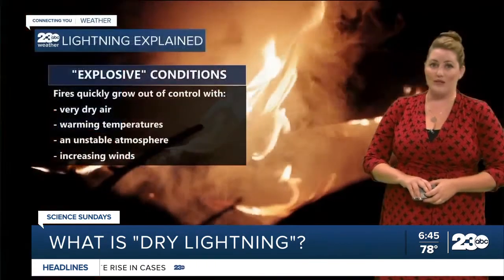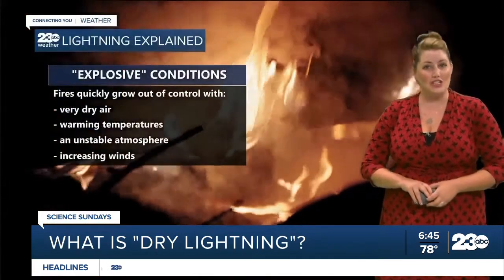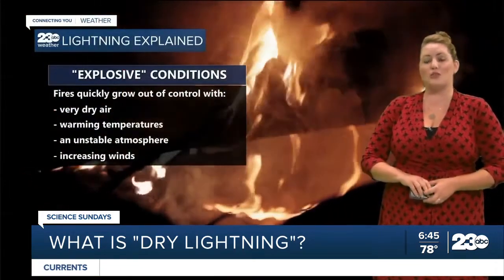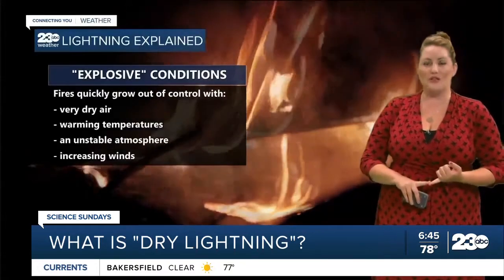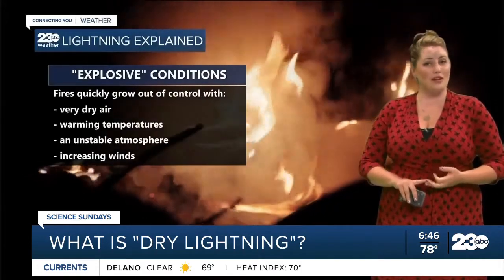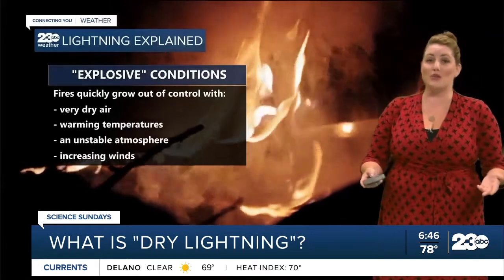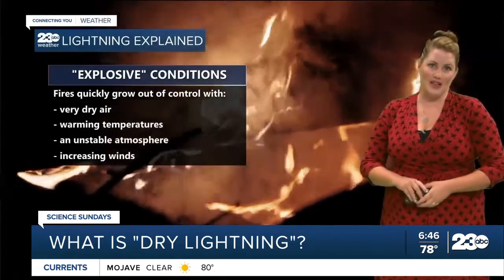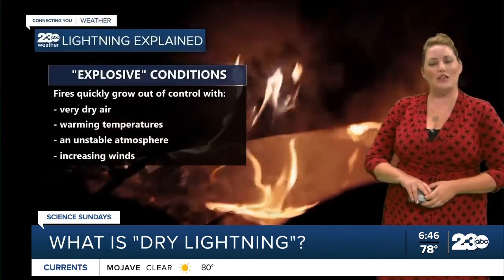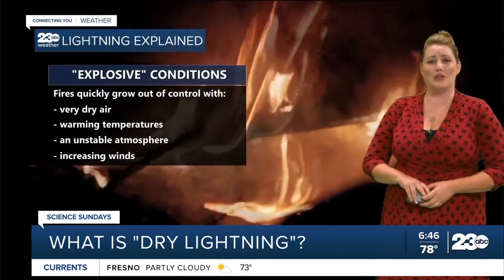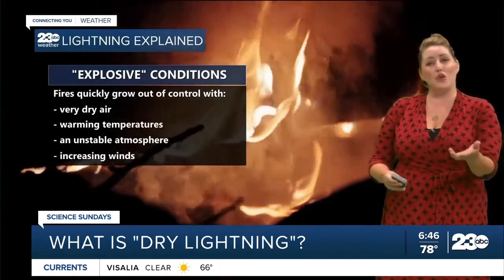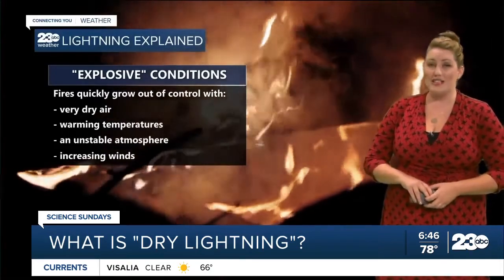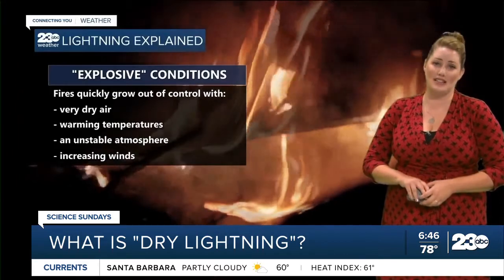Any small fire can flare up under specific atmospheric conditions, which firefighters often call explosive, such as periods of less than 10% relative humidity, warming temperatures, an unstable atmosphere, and most commonly increasing winds. When a new thunderstorm forms in the area, the associated gusty winds can quickly turn smoldering organic material into a raging fire. Thunderstorm winds tend to be erratic in direction and speed, posing one of the greatest dangers for firefighters responding to the scene.